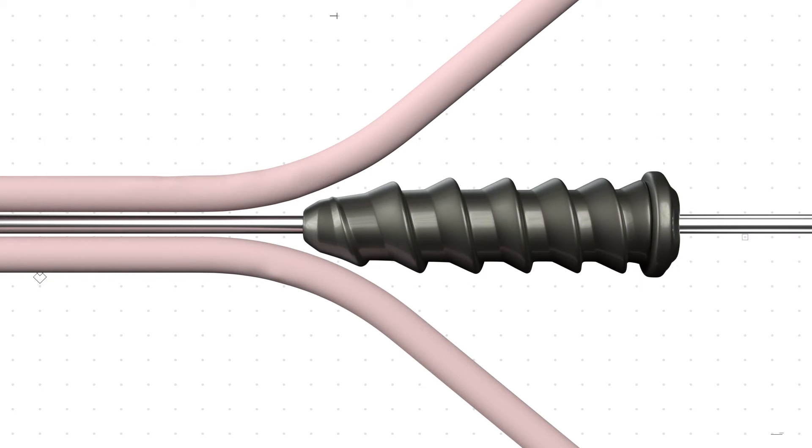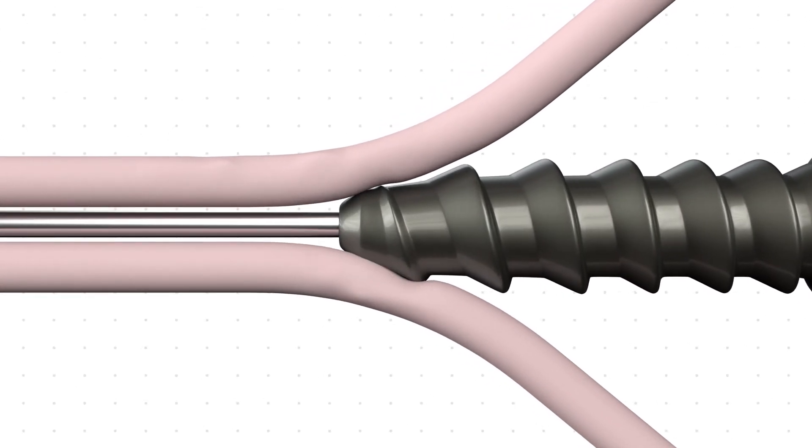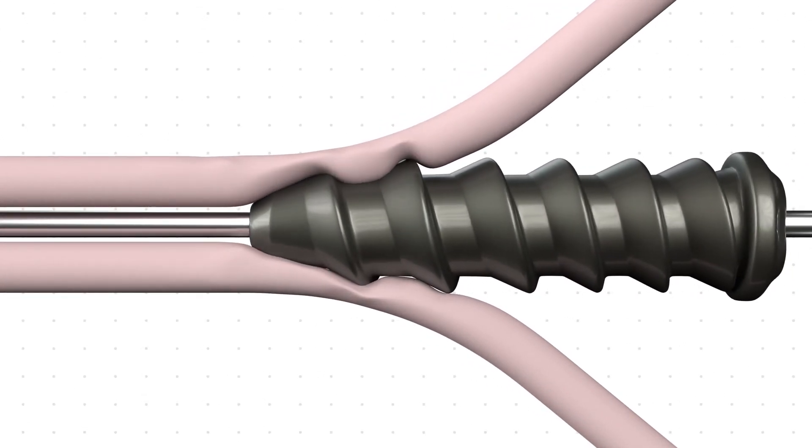While securing the screw, the blunt thread edges firmly press the graft against the bone without damaging it.